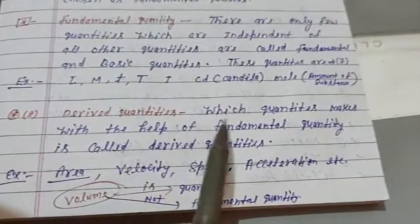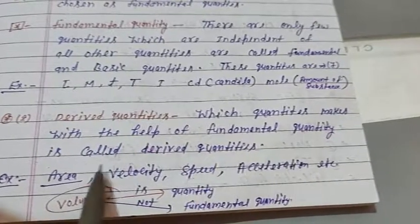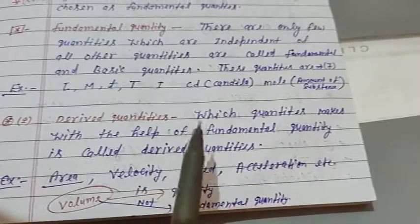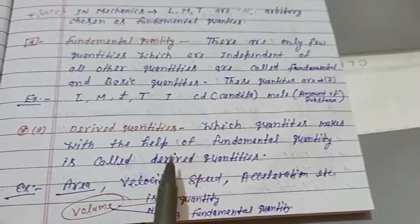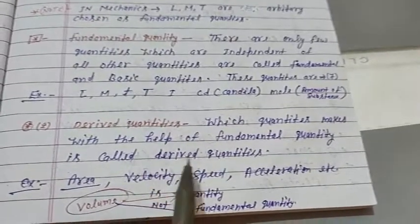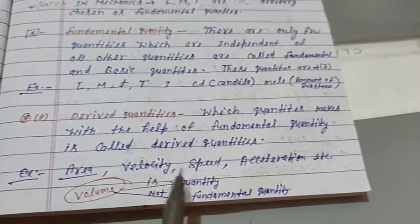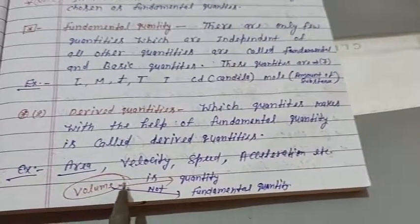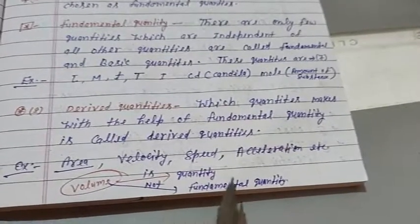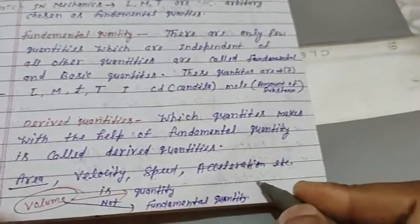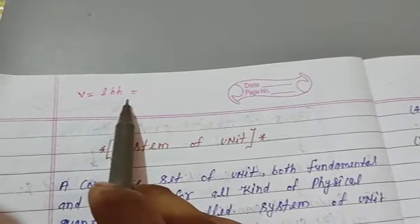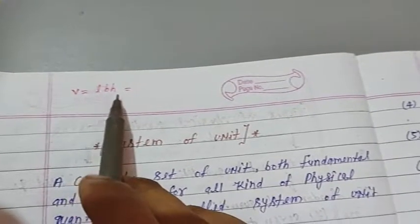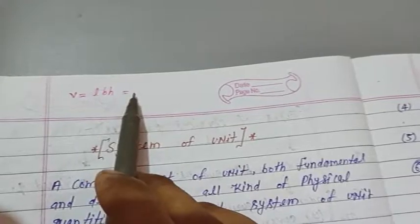Derived quantities: which quantities make with the help of the fundamental quantities is called the derived quantities. Fundamental quantities की help से बनती हैं, those are derived quantities. जैसे area है, velocity है, speed है, acceleration है. Suppose that volume. Volume is quantity है, not fundamental quantity है. Volume का formula क्या होता है? Volume equals lbh. Length, width, and height.